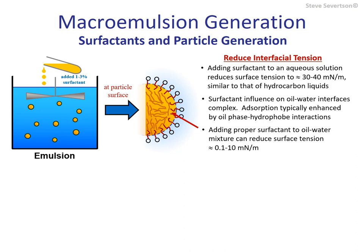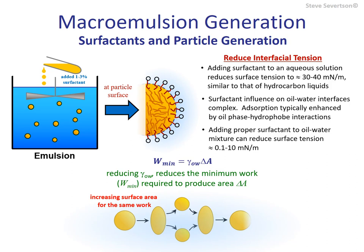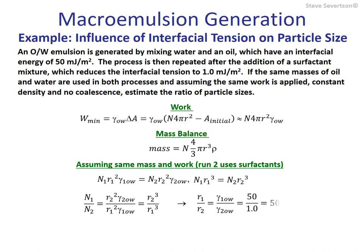The impact of this can be seen through the equation for the minimum amount of work required to generate new surface area, where the interfacial tension is that between oil and water. By lowering this value by more than an order of magnitude, we reduce the minimum work required for creating new surface area by an equivalent factor, as well as reducing the driving force for particle coalescence. In a worked example, oil and water are mixed with and without an emulsifier. Assuming the same work is done and assuming constant density and no coalescence, the ratio of average particle diameters formed with and without surfactant equals the inverse of the ratio of interfacial tensions. This shows that the presence of surfactants reduces particle sizes by 1 to 2 orders of magnitude.